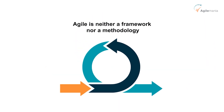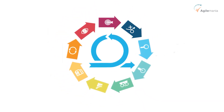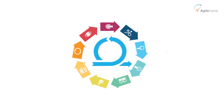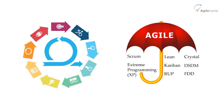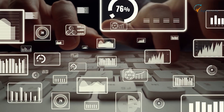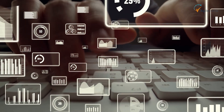So agile is neither a framework nor a methodology. Agile doesn't tell us how to manage projects or how to build software — agile frameworks do that. These frameworks, guided by the umbrella concept of agile, which is customer-focused, short iterations, faster feedback, and responding to change, provide some guidelines and practices to manage complex projects.